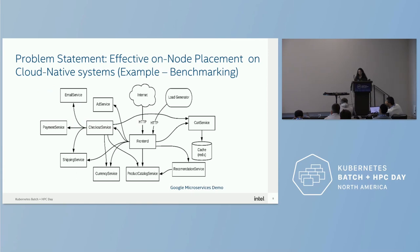The first workload we looked at is the microservice-based Google Microservices Demo. This application is a classic three-tier app including a front-end to receive requests from clients, business logic services, and a database store where we store transactions for customers. We evaluated the throughput of such a system on a distributed system with four machines, placing a load generator on a separate machine with three worker machines for front-end, business logic, and transactions. Our goal was to optimize throughput under given latency constraints.